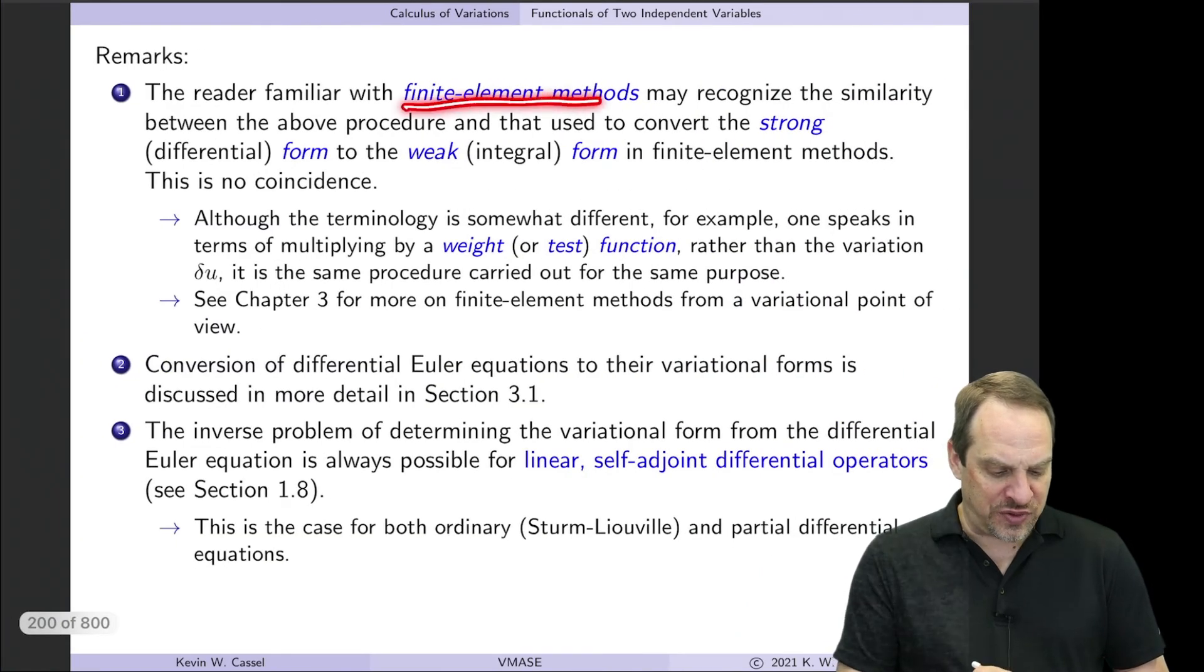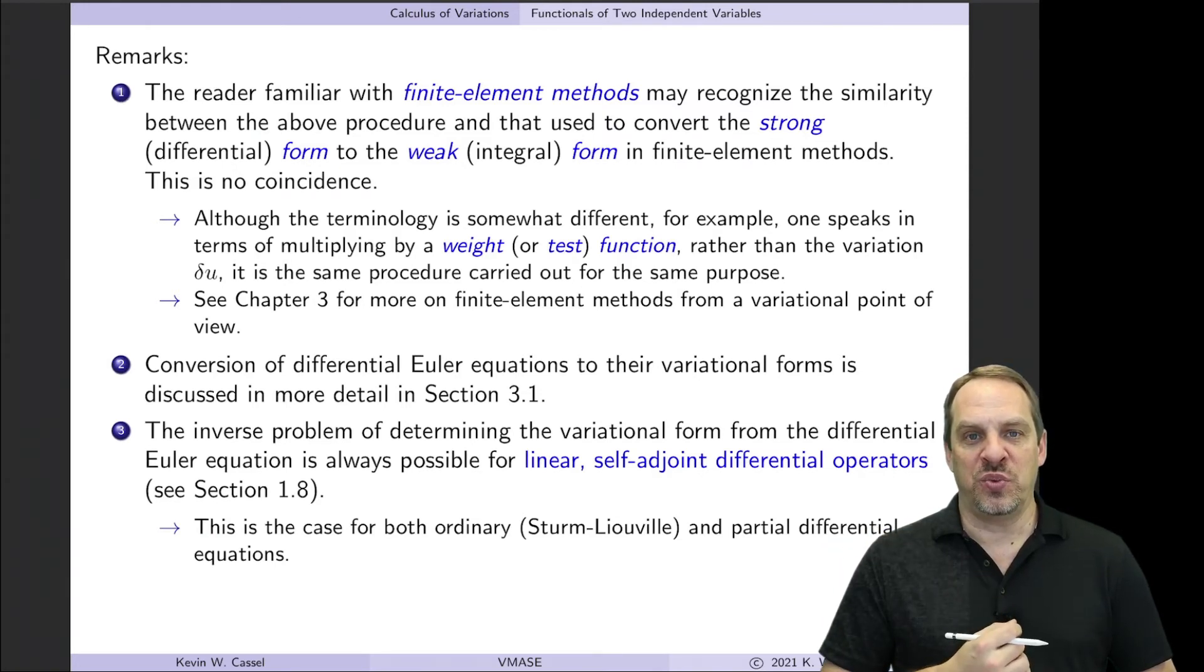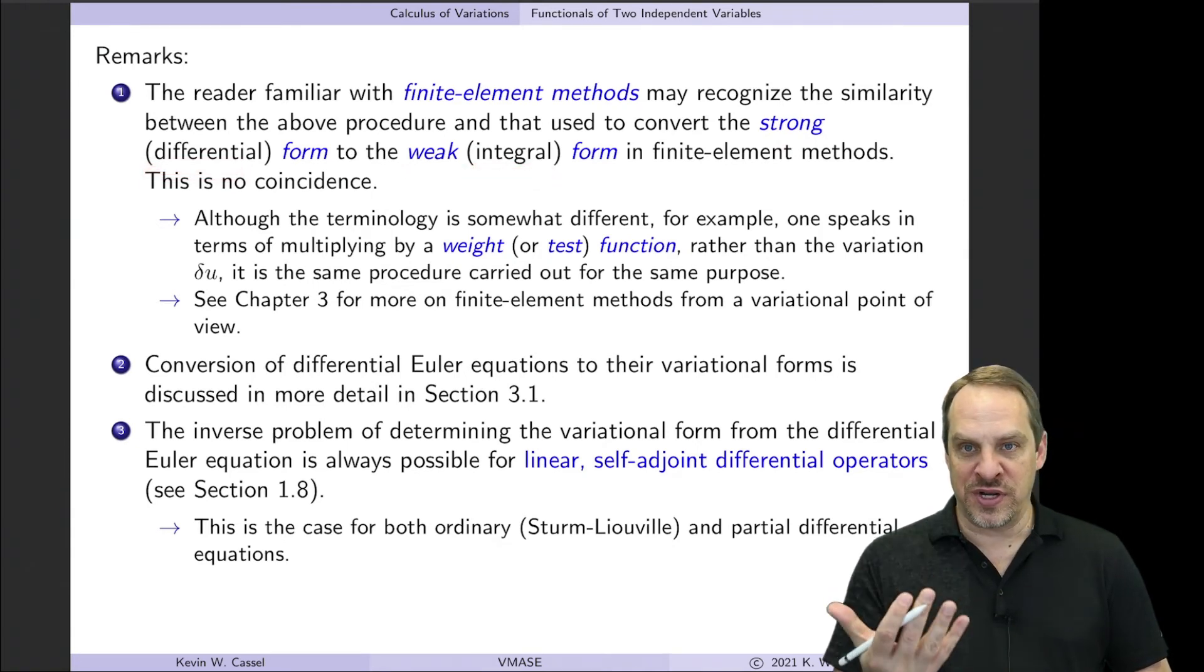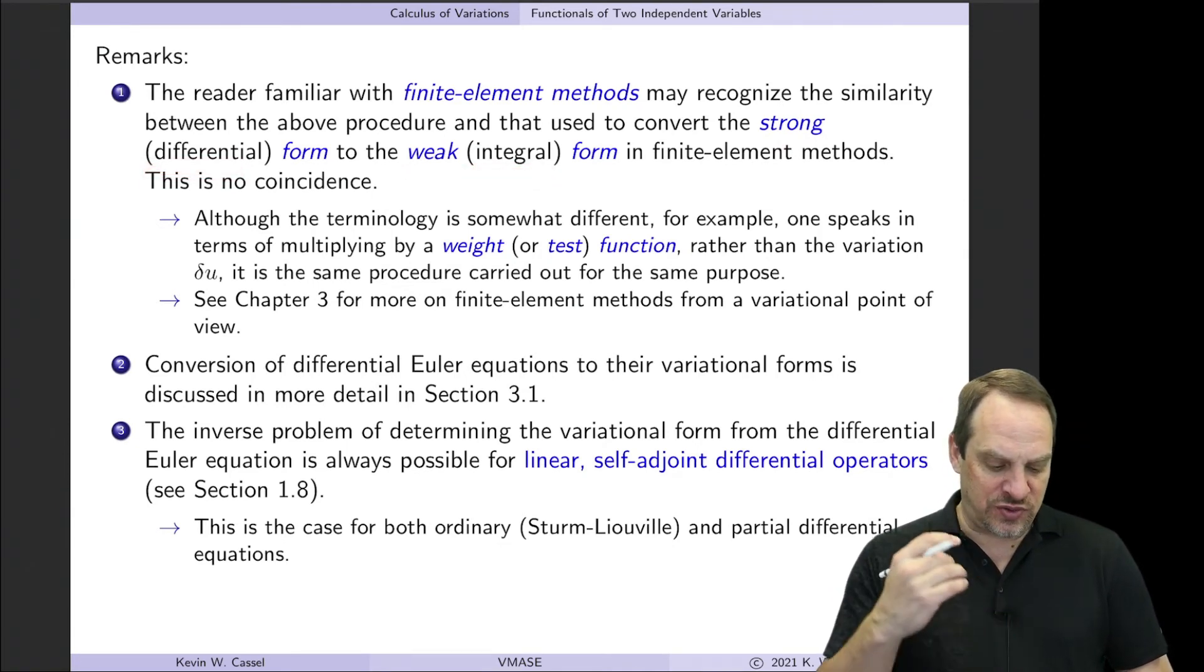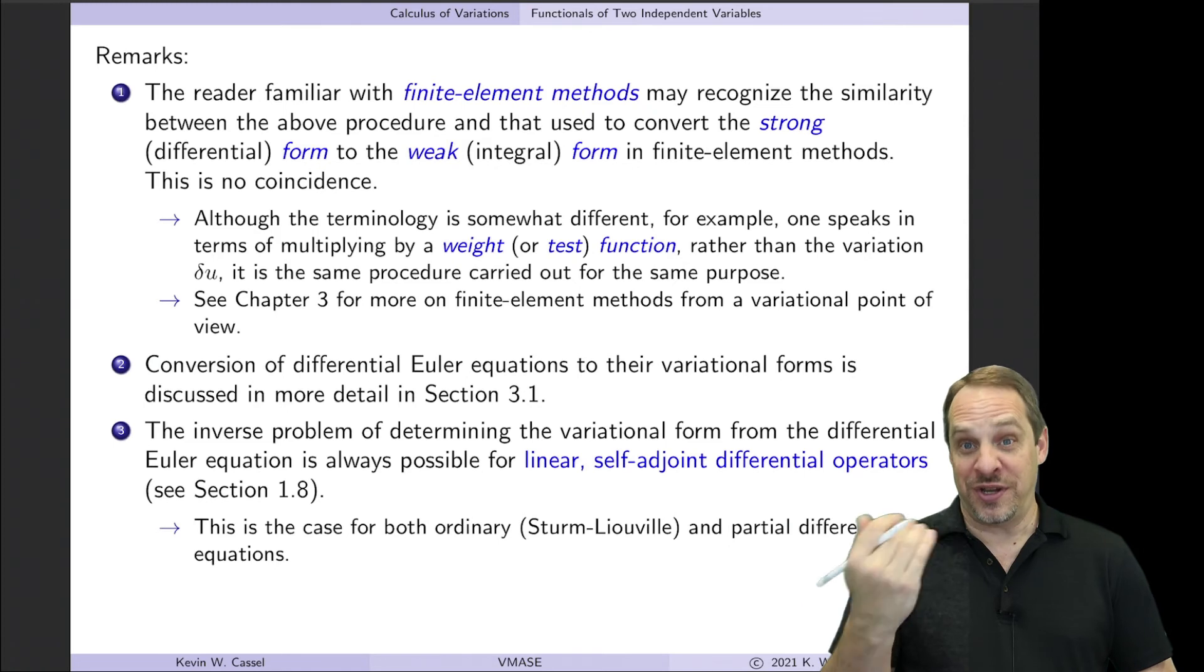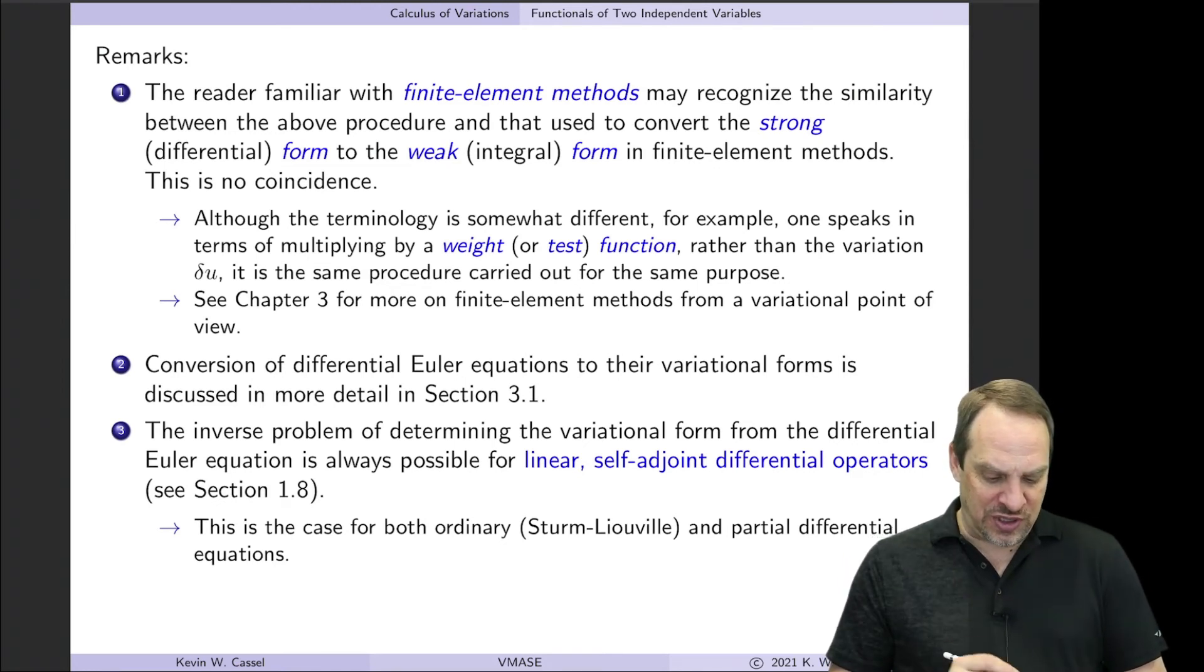Now for those of you who are familiar with finite element methods, you might have recognized some of the terminology that I just used as well as some of the operations that I used and see some similarities with what we do in finite element methods. So as I mentioned, we have the strong and the weak form. The strong form is the differential form and the weak form is the integral or variational form. And so if you remember, when you go from the strong form to the weak form, you multiply by your weight functions, which are here the delta U's. You integrate over the domain and you do integration by parts to get the weak form. It's exactly what we just did, but we did it in the more general variational methods context.